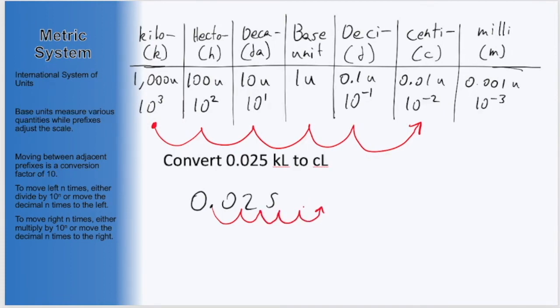Moving the decimal five spaces to the right, and filling in the zeros that are missing, ends up giving us 2500 now in centiliters.